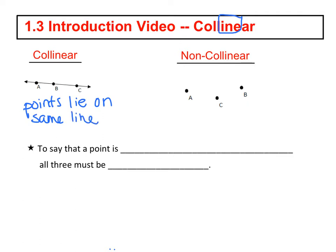So did you write that in? If not, pause the video and write that in. So you have colinear points and you also have non-colinear points. So what does that mean? The points do not lie on the same line. So go ahead and write that in.